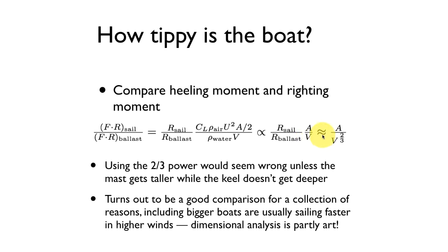And if we look at that, that's not too far off from that area over volume to the 2/3 number. But what's going on here? How did we get from V to V to the 2/3?